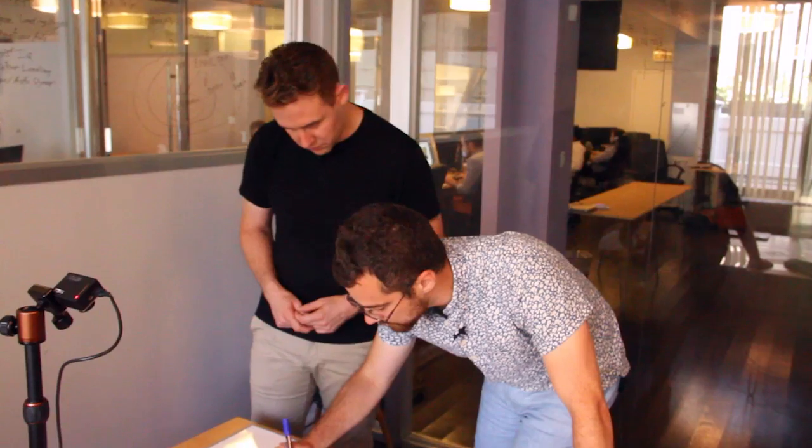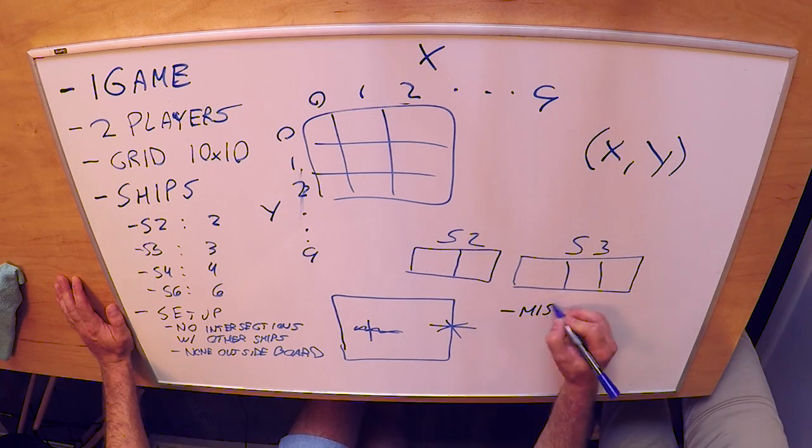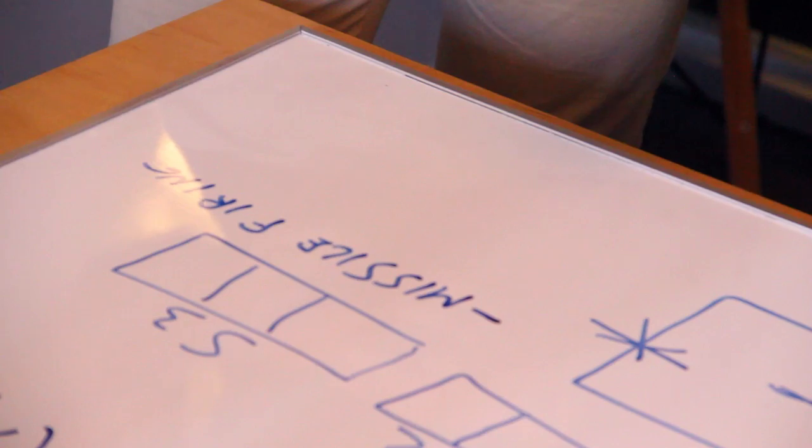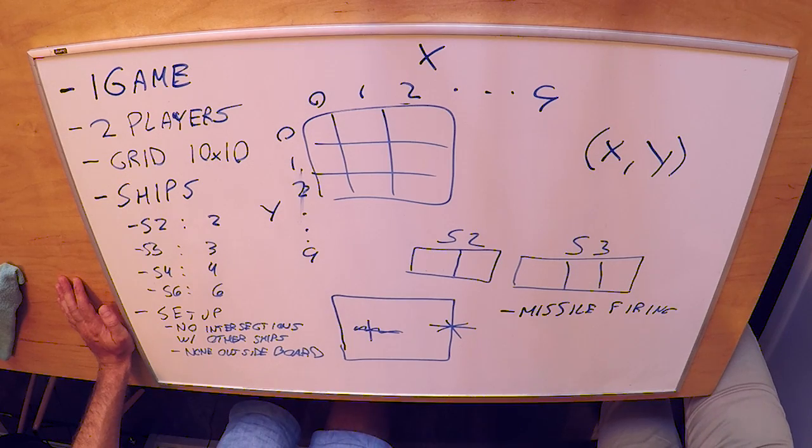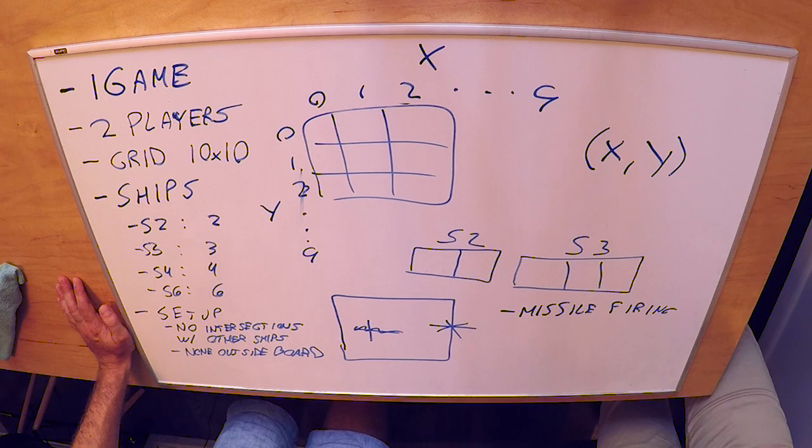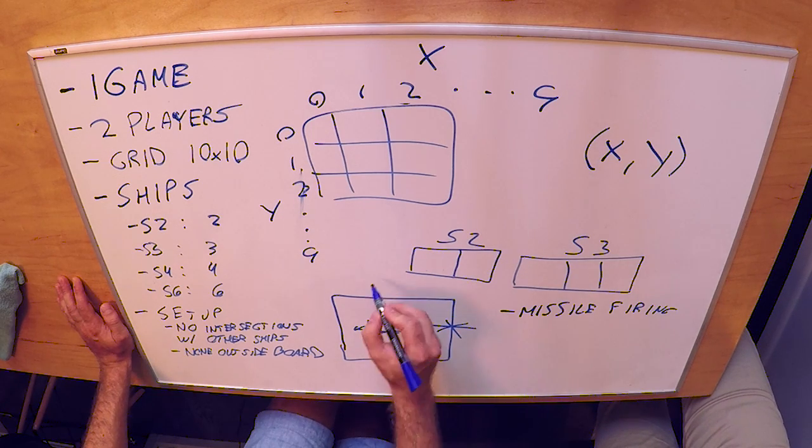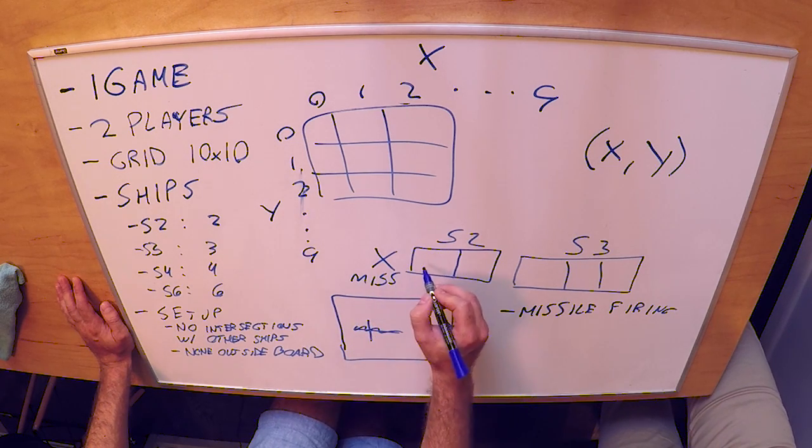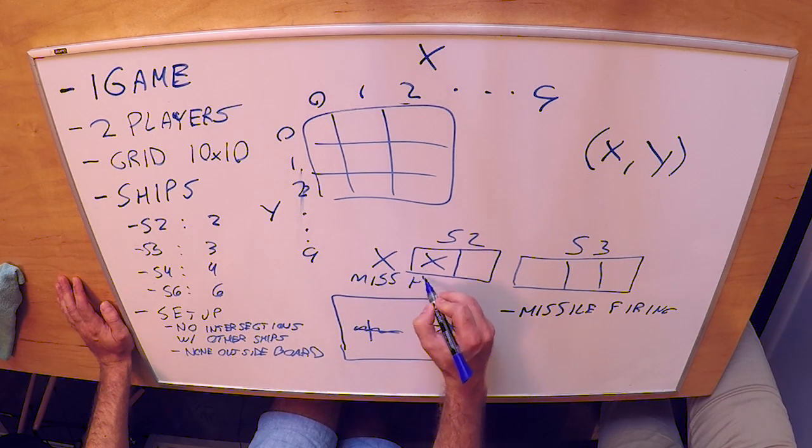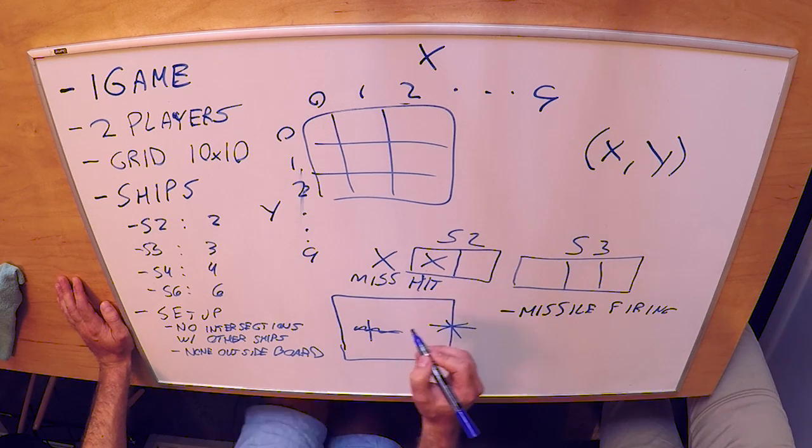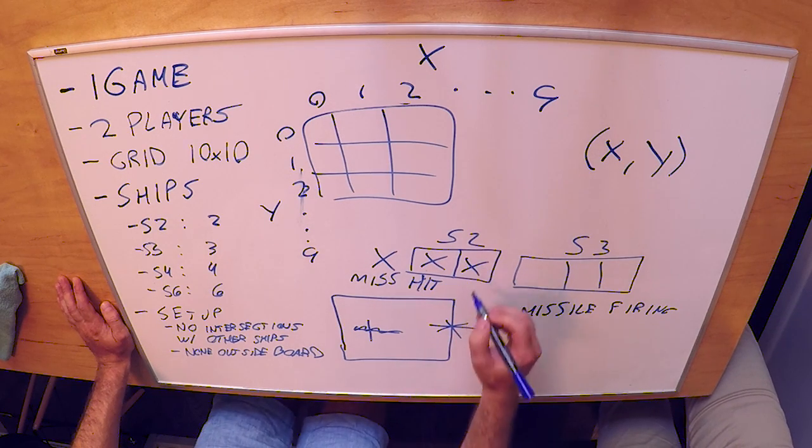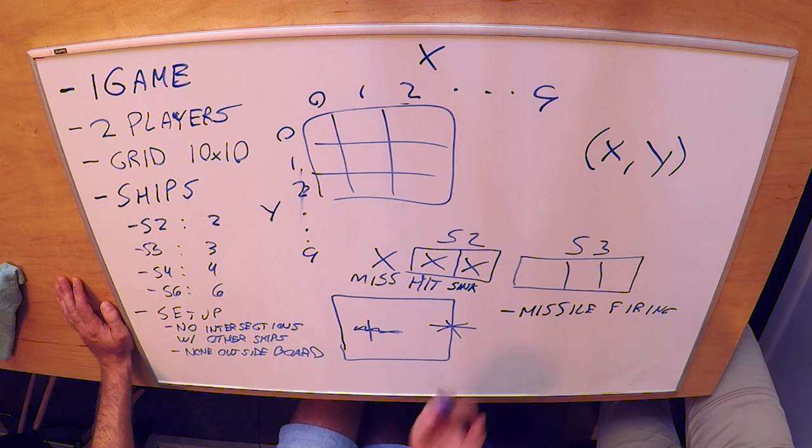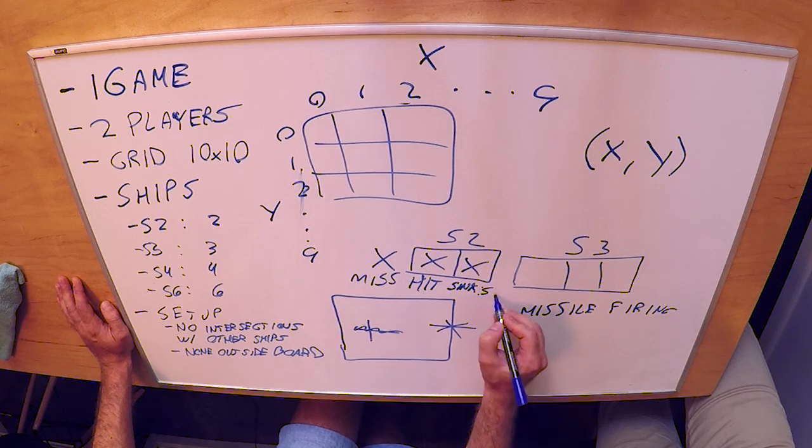And then the next phase of the game we're gonna call missile firing. So during missile firing what you're doing is you're announcing a coordinate on the other player's board and they're going to determine whether or not that corresponds to a ship. If we fired right there we would say miss. If we hit right there we would call that a hit because that corresponds to a position on the ship. But then if we do the last one what we're actually going to say there is not hit but sink. We're going to say that you sank a particular ship. We're going to identify which one. So sink S2.